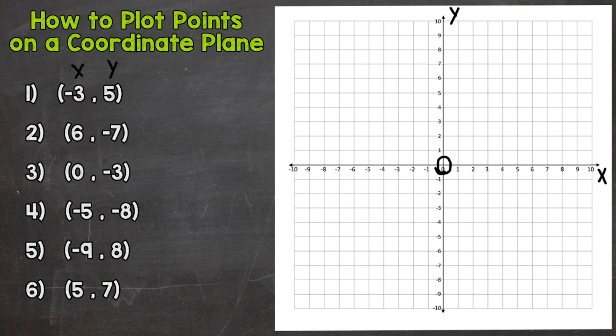And then we go over on our x-axis first. And our first coordinate here is a negative 3. That's our x. So we need to go left to 0 over to negative 3 here.